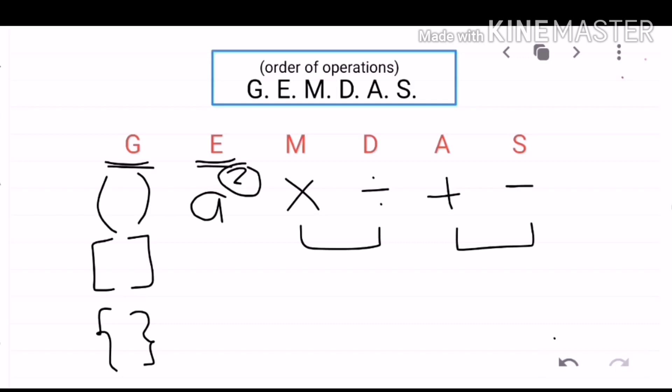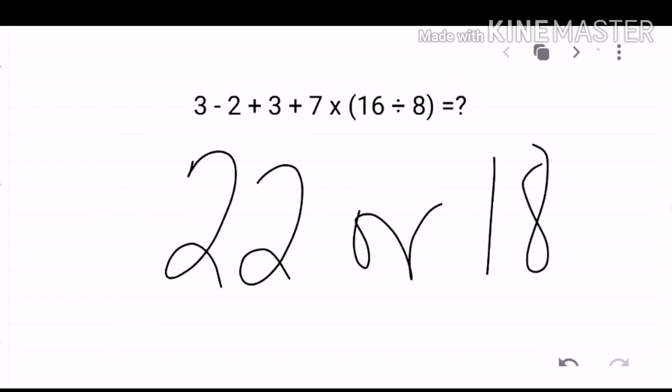So, that is the summary of what we call GEMDAS. Now, let's try to apply GEMDAS in answering the given example: 3 minus 2 plus 3 plus 7 times the quantity 16 divided by 8 is equal to what? We'll see what answer we obtain.